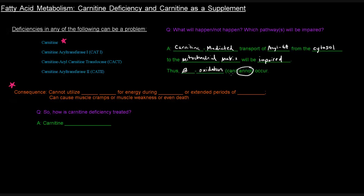Which is a problem. The deficiencies in CAT1, CAT2, and the translocase are genetic diseases, since these are proteins coded for by DNA, and they appear to be pretty rare. Even a carnitine deficiency can be genetic. I want to focus on the consequence of a carnitine deficiency.